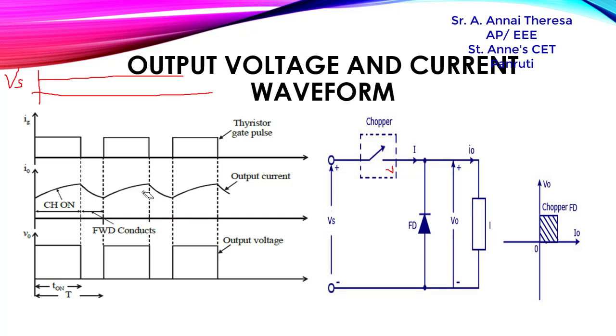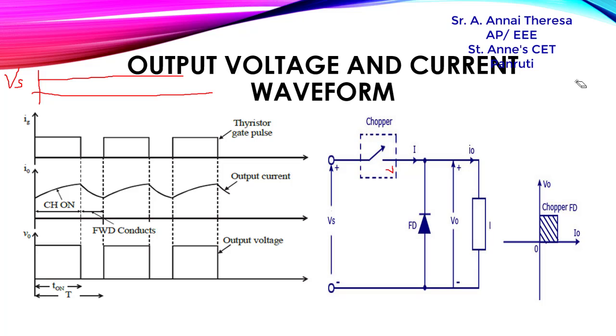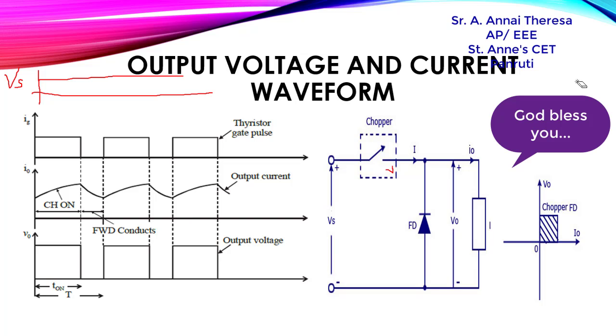So if you see, the output voltage and output current are both in positive polarities — both are positive — that's why it is called a first quadrant chopper. That's all about the Type A chopper. In the next video session we will see about the Type B chopper. Thank you.